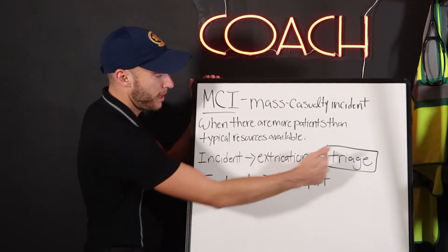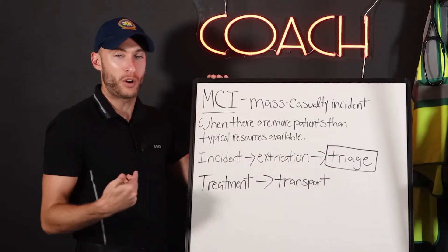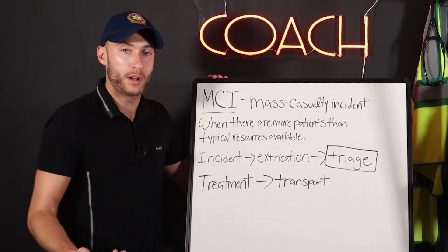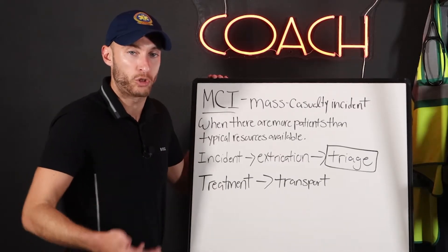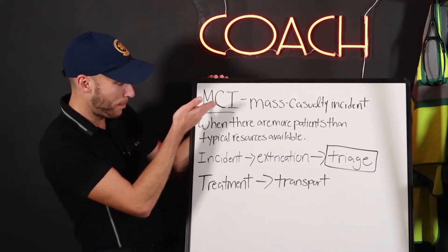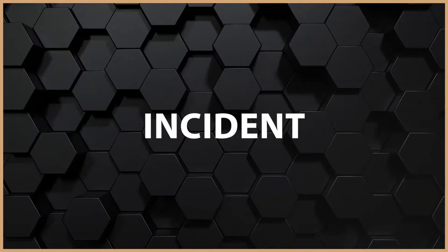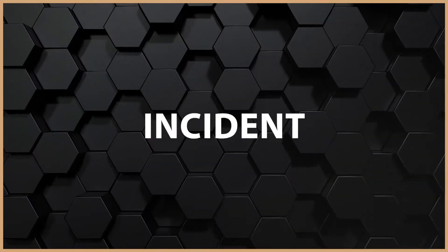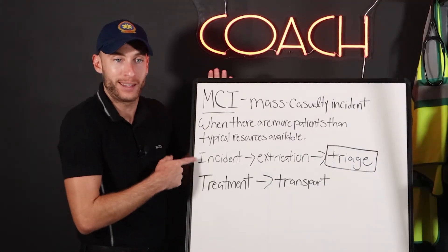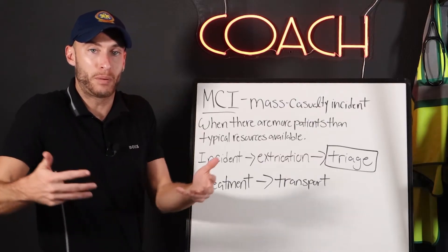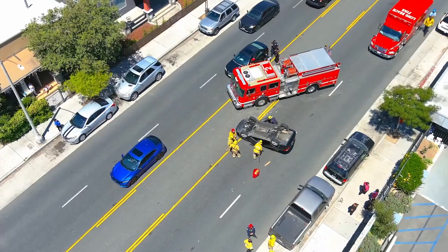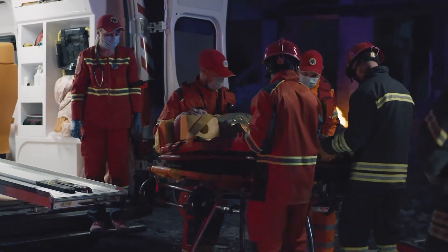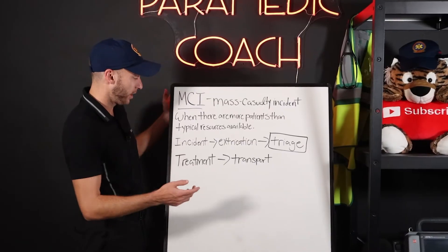This is what an MCI kind of looks like, so you understand where we're going to be doing this mass amount of triage with so many patients. This is the lay of the land. We have the incident — where the actual event is taking place. It could be an extremely large car accident, it could be a fire, it could be industrial. So many different things.